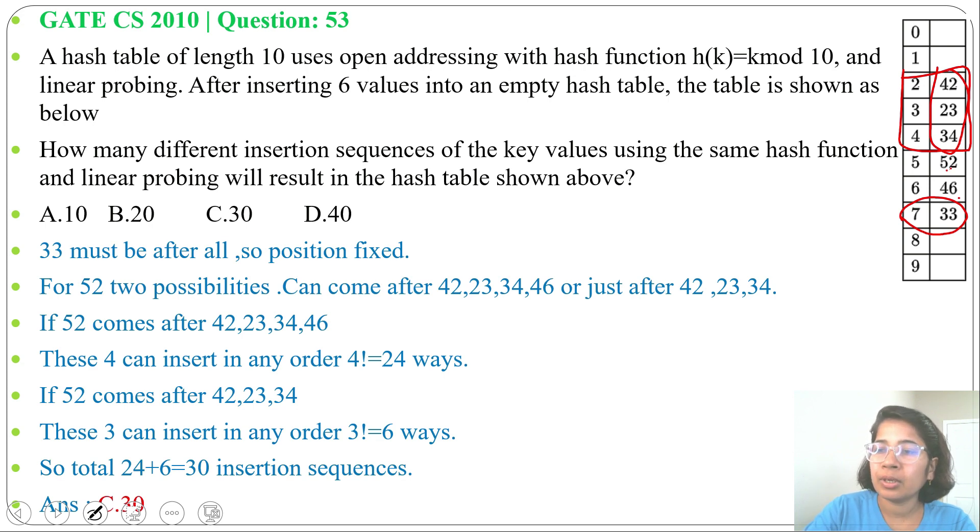If 52 comes after 42, 23, 34 and 46 means after these 4 keys, then in 4 factorial ways we can arrange those 4 keys. So 3 factorial plus 4 factorial is 30. I already discussed hashing.